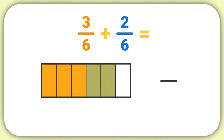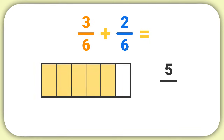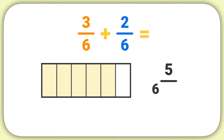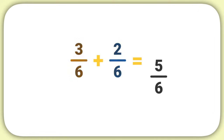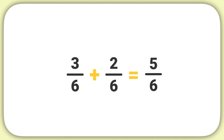To write this model as a fraction, you would see that five pieces are shaded, so a numerator of five, and there are six pieces total, so the denominator is six. Our answer is that three-sixths plus two-sixths equals five-sixths.